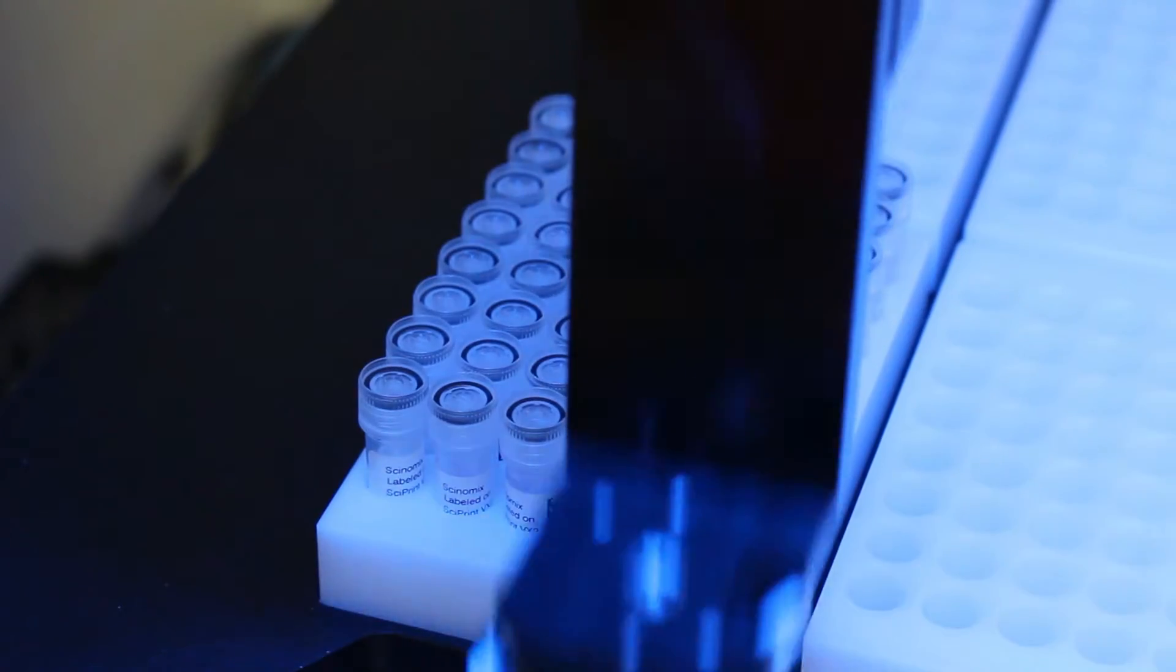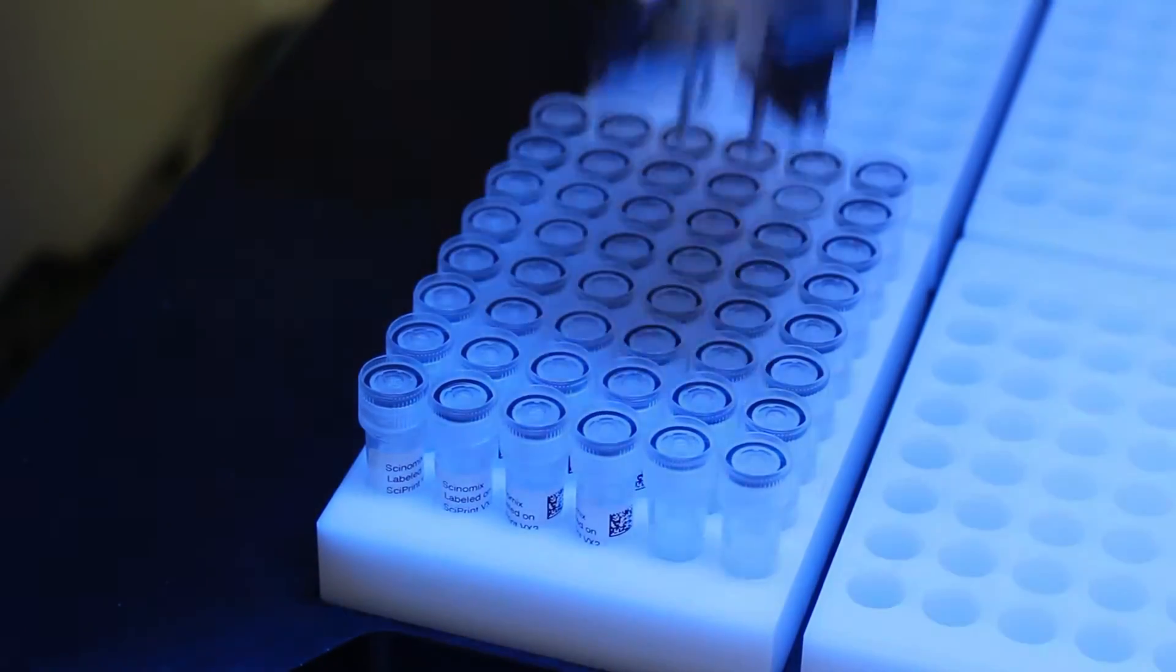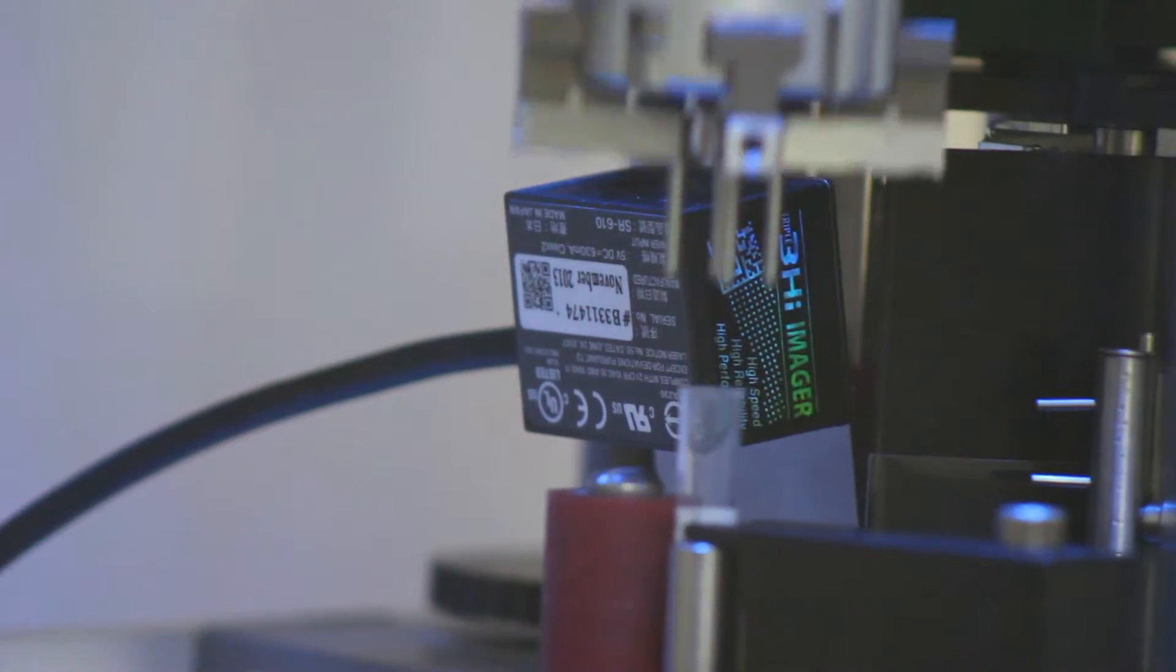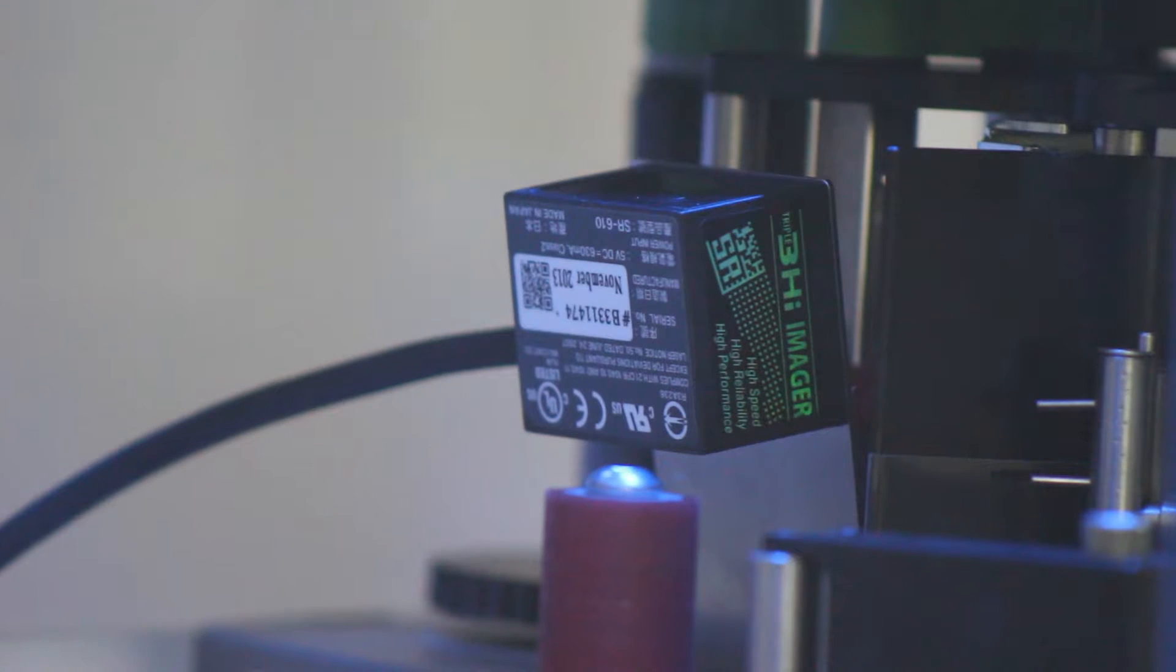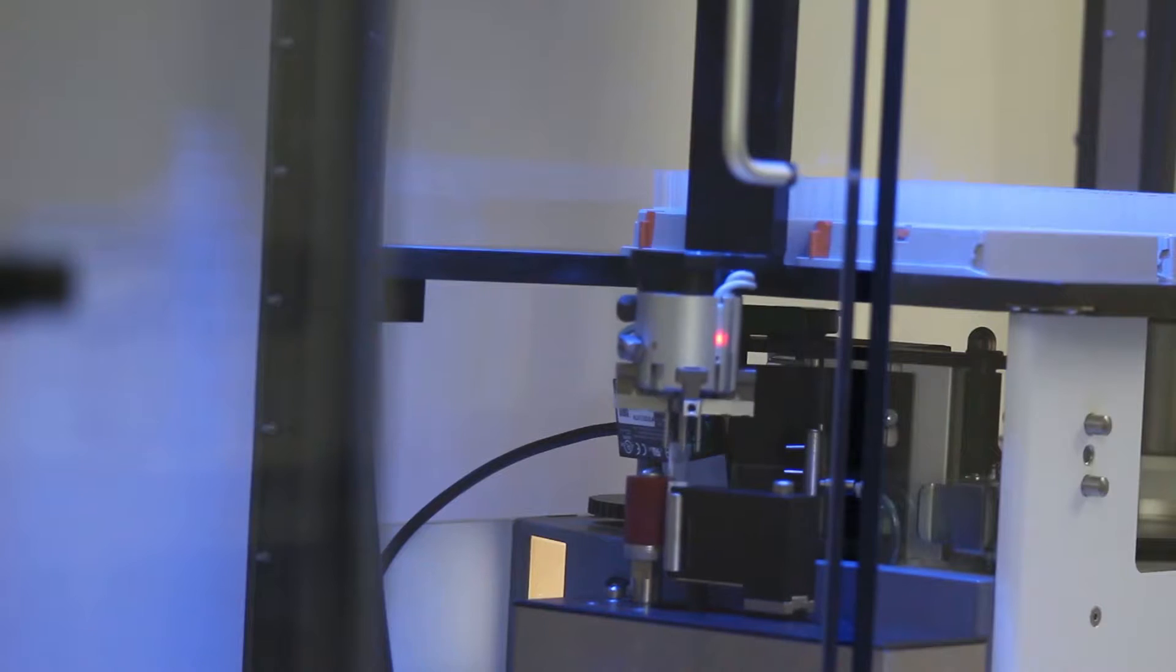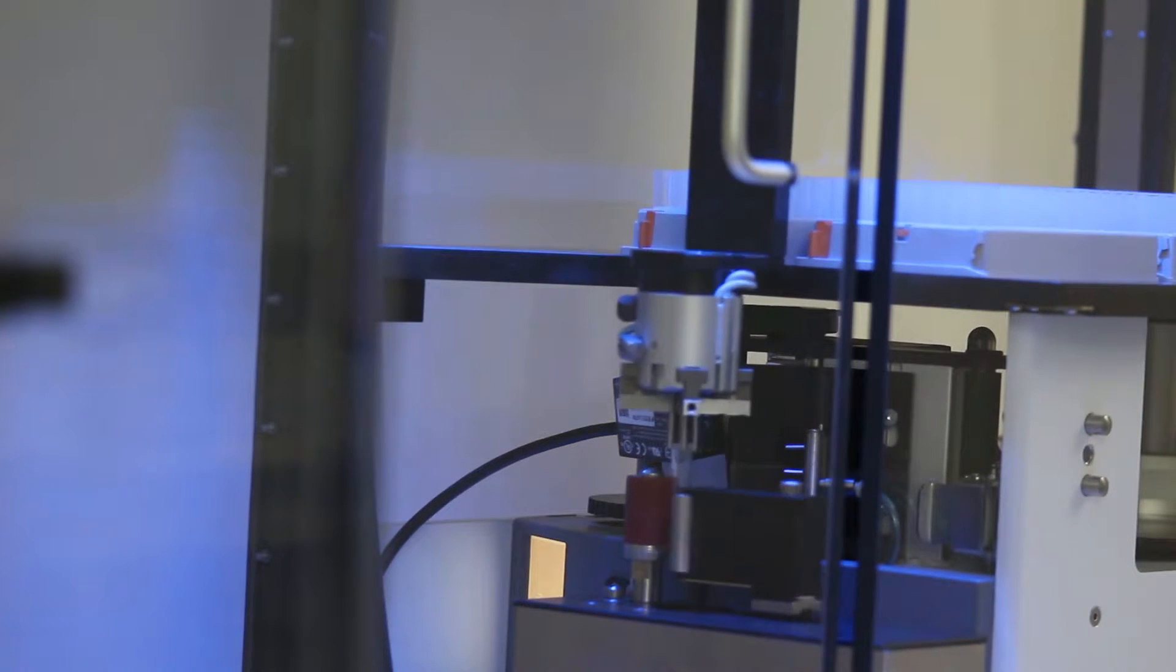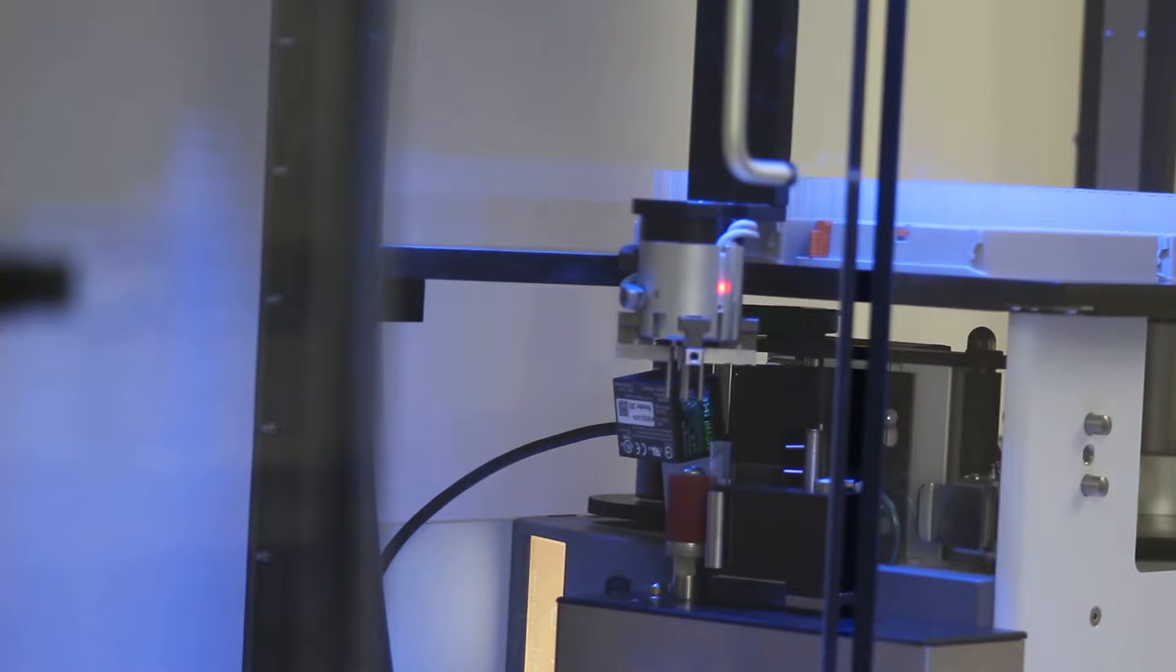In addition to vial labeling, Synomics offers optional features to accommodate your specific application. An optional 2D barcode scanner can be attached to the system to be used in one of two ways. The scanner can read the underside of matrix and micronic-style vials, which is useful for data lookup, or it can be used for validation of the printed label.